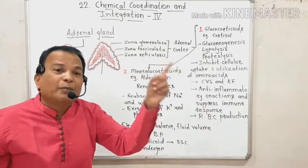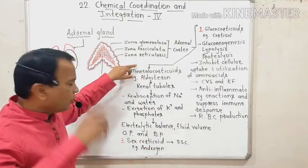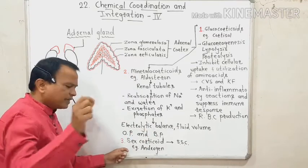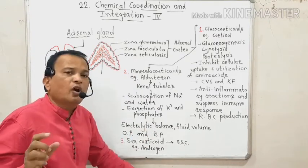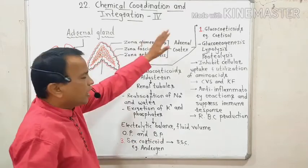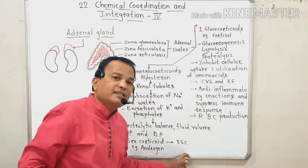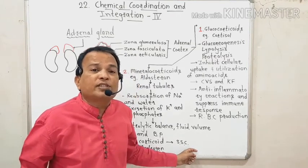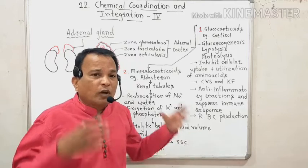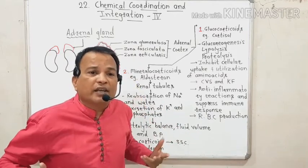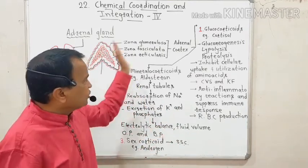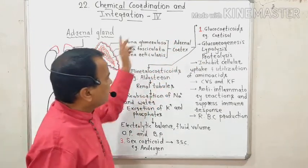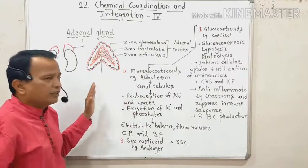The third hormone is the sex corticoid — androgen — secreted from the adrenal cortex. It plays an important role in developing secondary sexual characters, such as the formation of facial hair, axillary hair, and pubic hair. This covers all the functions of hormones secreted from the adrenal cortex.